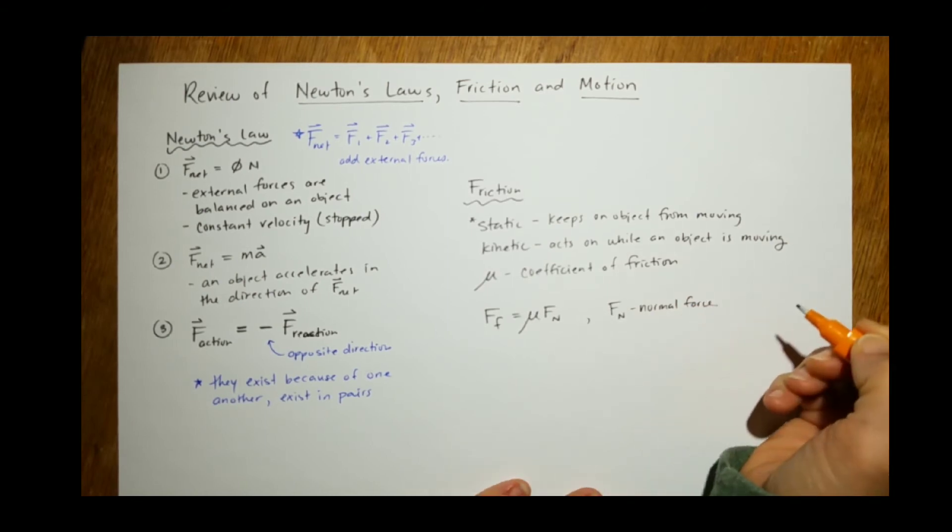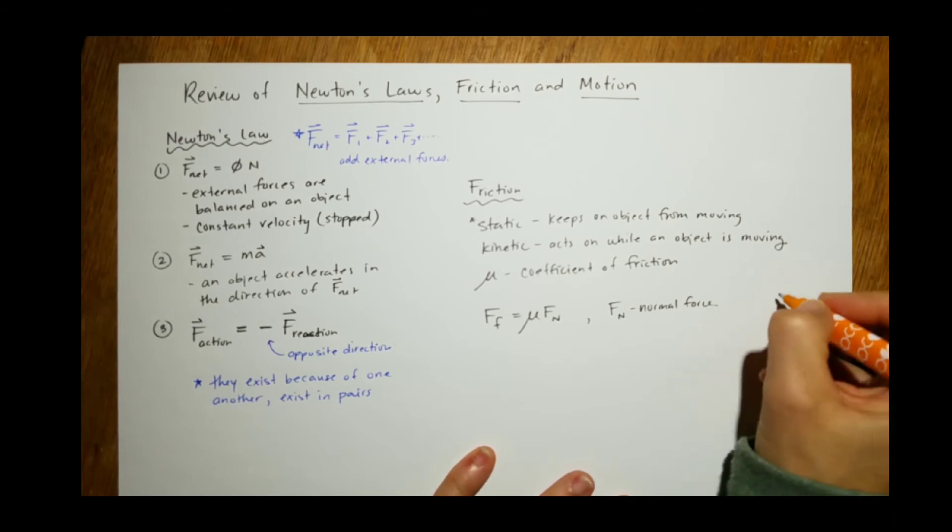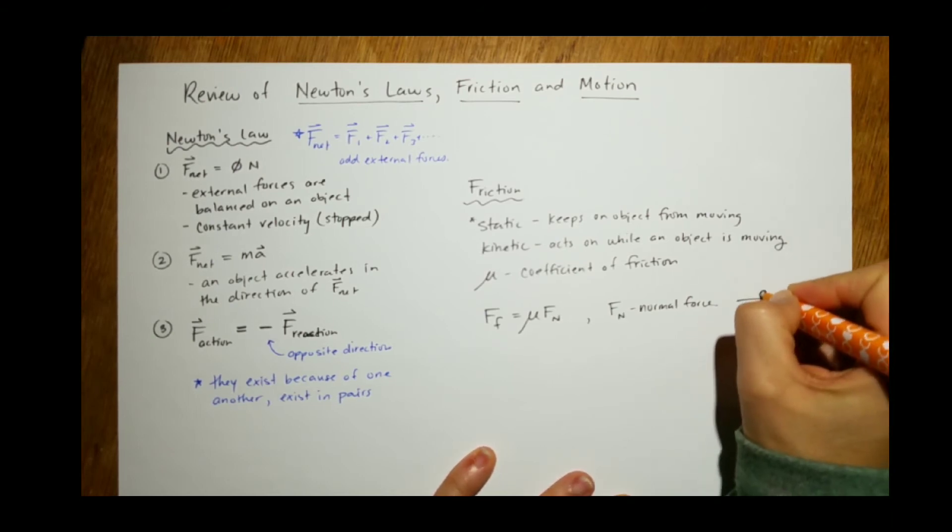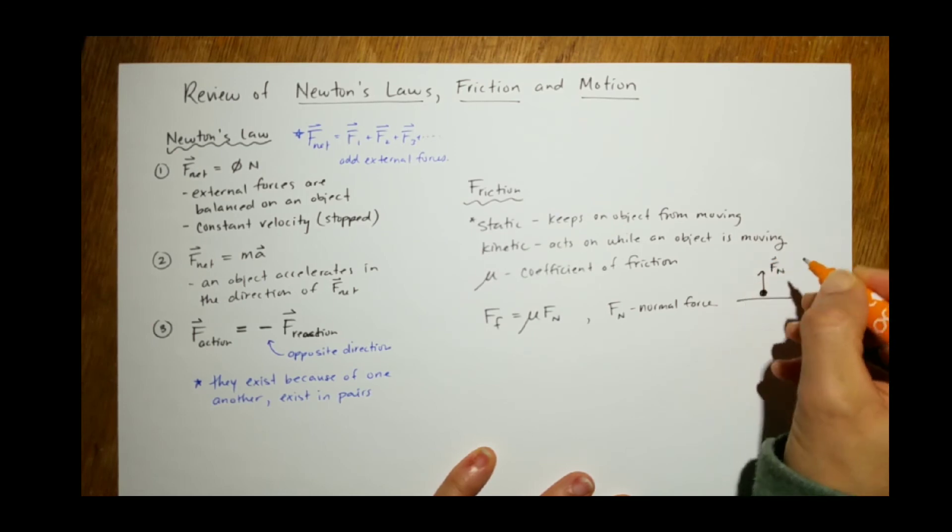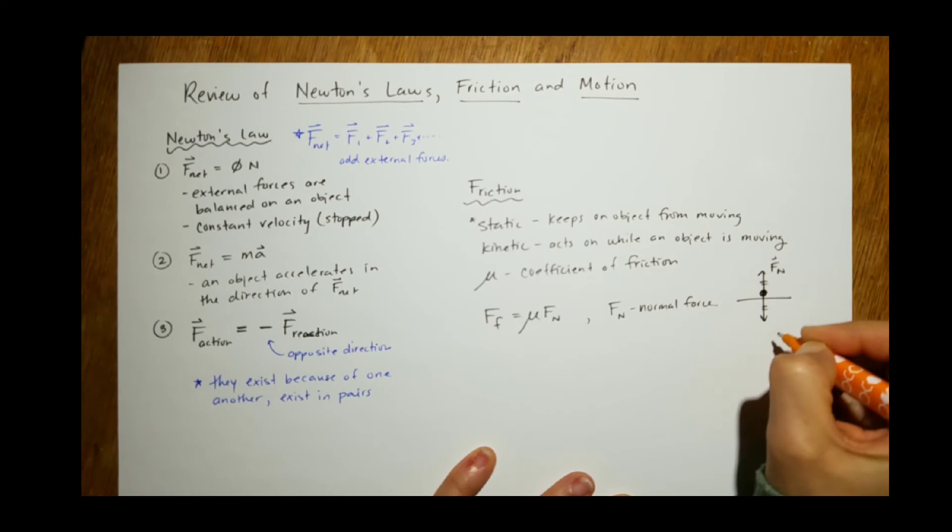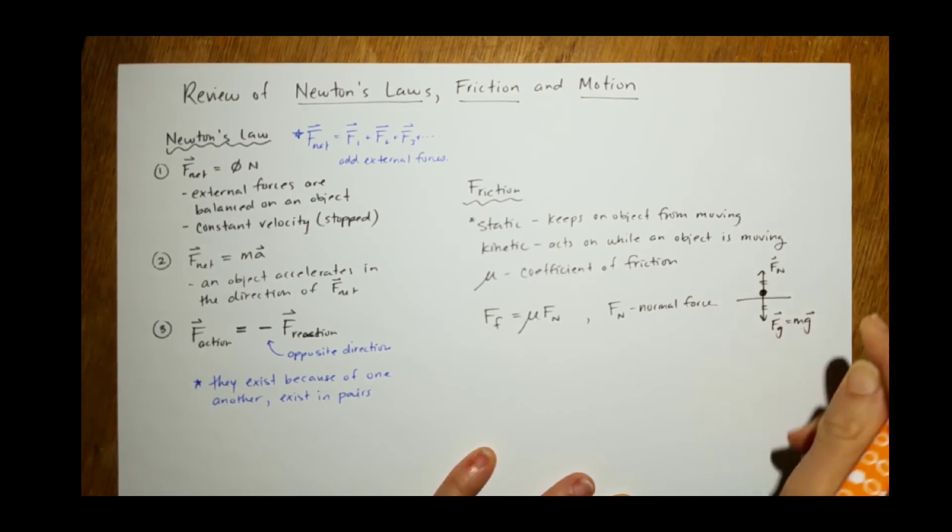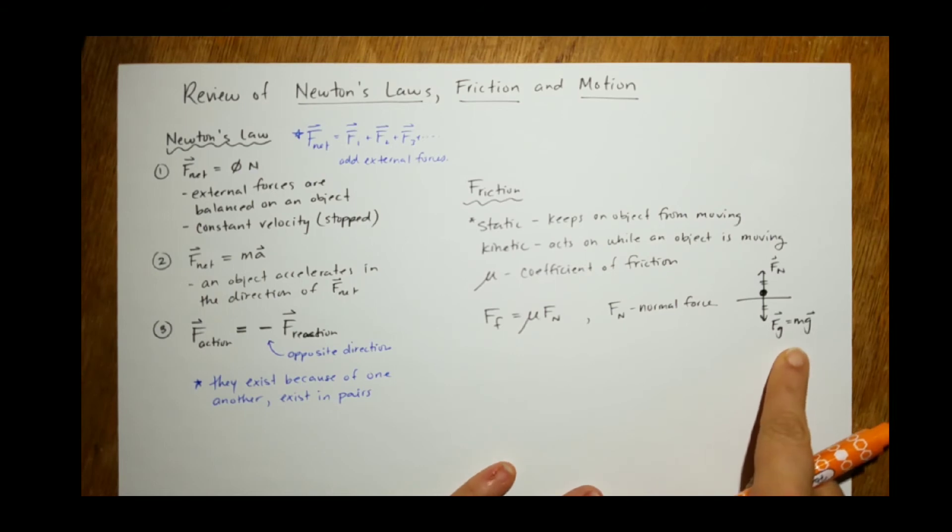Which, in most of grade 11 cases, on horizontal surfaces, we have Fn is equivalent to Fg, which is mg, the force of gravity. The mass times acceleration due to gravity.